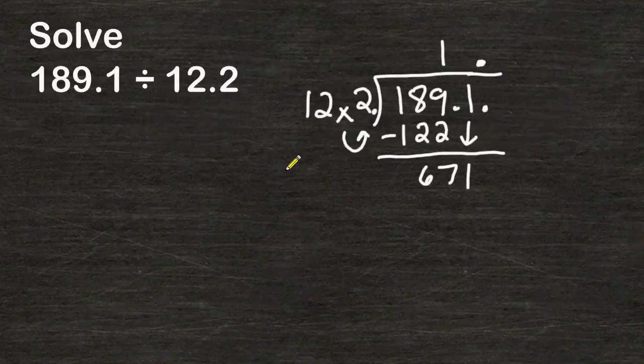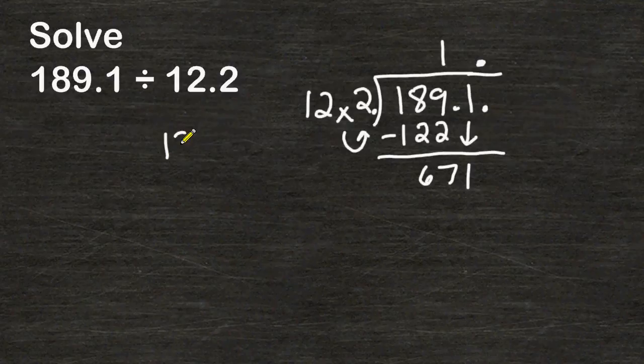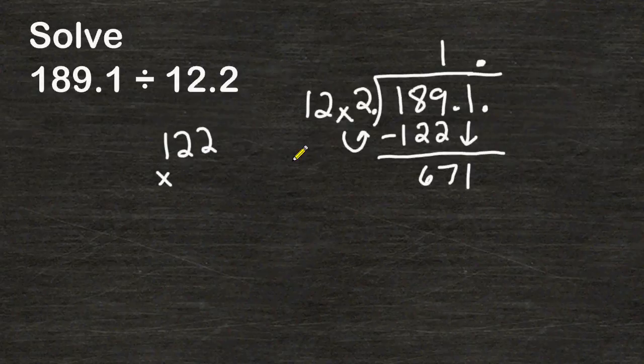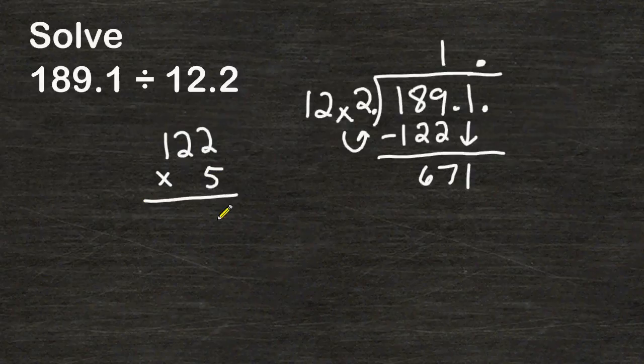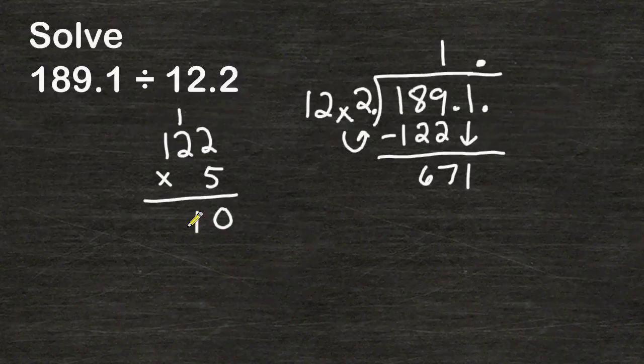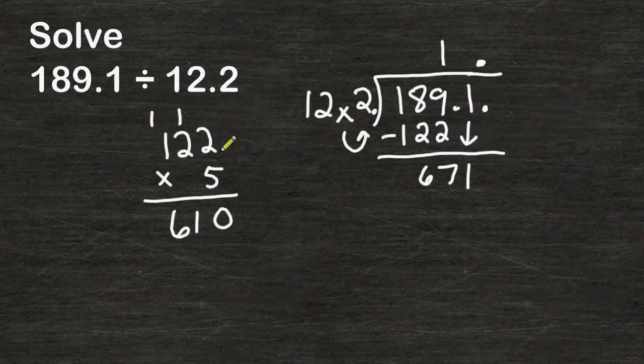If you are unsure how many times your divisor can fit into the number shown below simply take your divisor and start multiplying it by a single digit and start with something that's reasonable. Like to me it looks like 122 can fit into 671 five times. Five times two is ten. Carry the one. Five times two is ten plus one is eleven. Five times one is five plus that one is six. So five groups of 122 gives a product of 610.